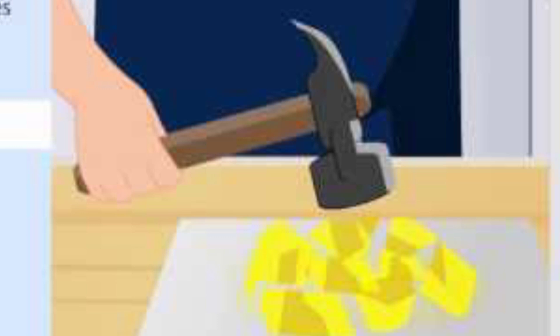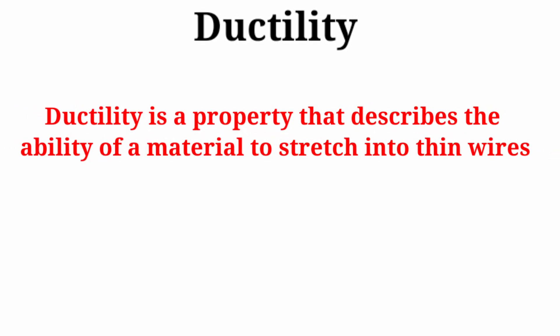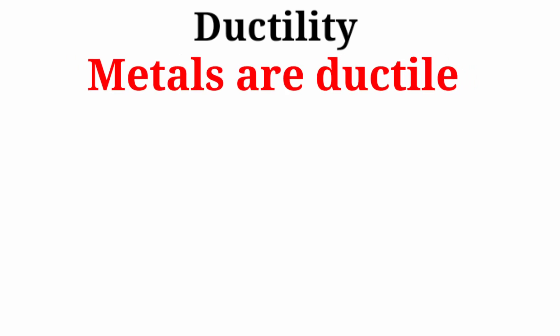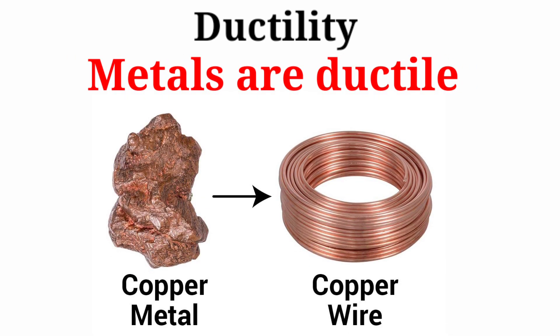Ductility is a property that describes the ability of a material to stretch into thin wires. Metals are ductile. For example, the electrical wires made of copper and aluminium.